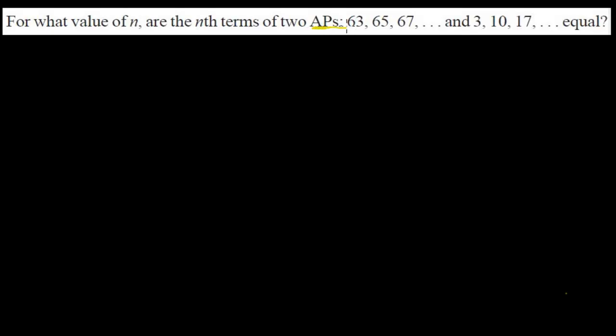Hi friends, here we are going to solve another problem of the arithmetic progression related to the Nth term formula. The question is: for what value of N are the Nth terms of two APs equal? The first AP is 63, 65, 67, and so on; and the second AP is 3, 10, 17, and so on. So we have two APs and we need to find the value of N where the Nth term is equal in both.